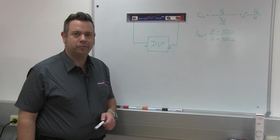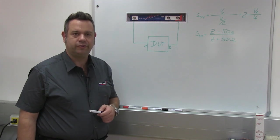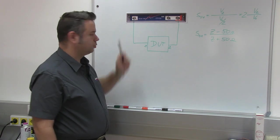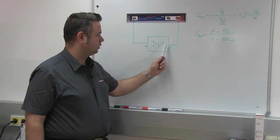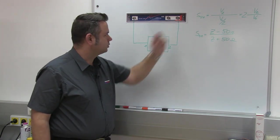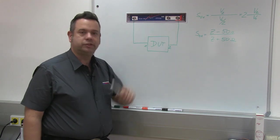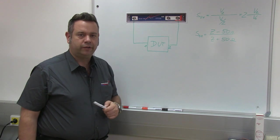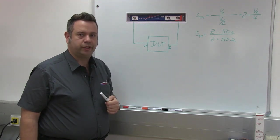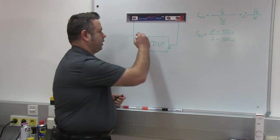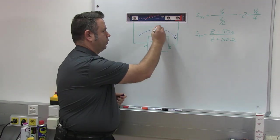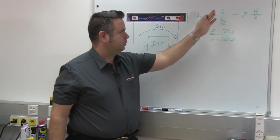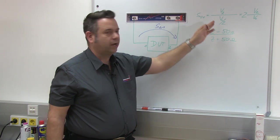Let's start with S-parameter measurements. An S-parameter measurement is done in a 50 ohm domain. We have a device under test which is connected to the output of the Bode 100 with its input, and the output of the device under test is connected to channel 2. Channel 2 needs to be terminated with 50 ohms and the Bode 100 has a 50 ohm source. We can measure the gain or transmission of the device — S21 — which is defined by the output voltage of the device under test divided by half of the source voltage.